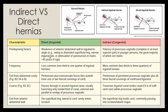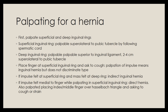Direct hernias are less common; indirect hernias are more common. Direct hernias exit the abdominal cavity directly, covered by peritoneum and transversalis fascia. Indirect hernias pass through the inguinal canal and are covered by peritoneum plus all three fascial coverings of the spermatic cord or round ligament. Direct hernias exit via the superficial ring lateral to the spermatic cord and very rarely enter the scrotum. Indirect hernias exit via the superficial ring inside the spermatic cord.